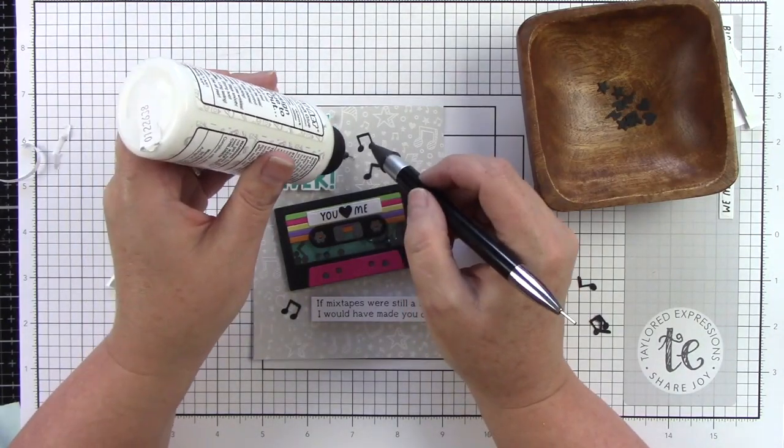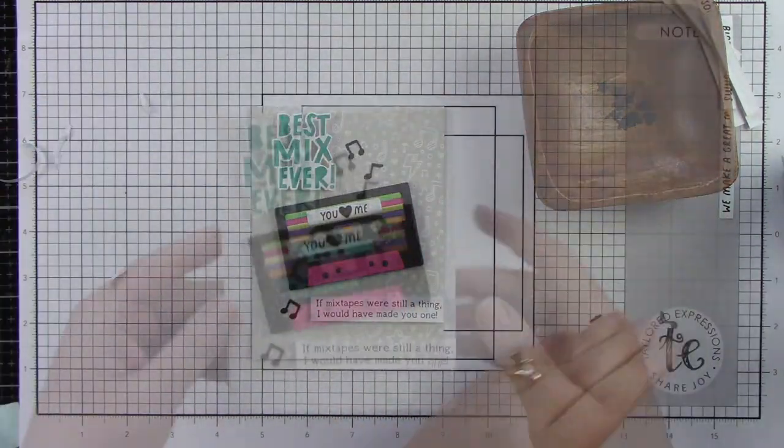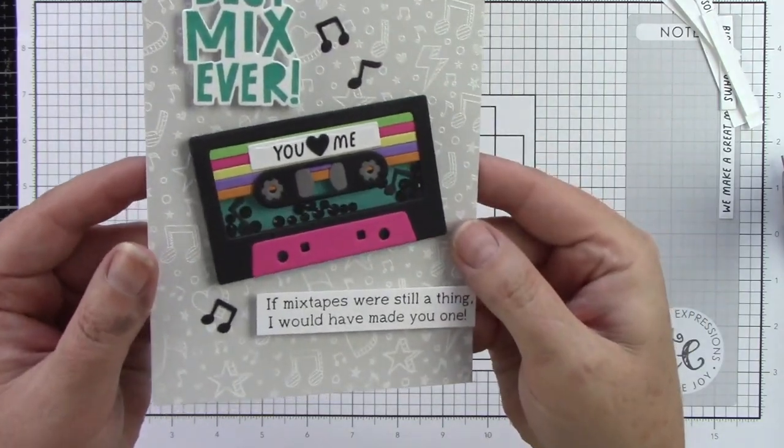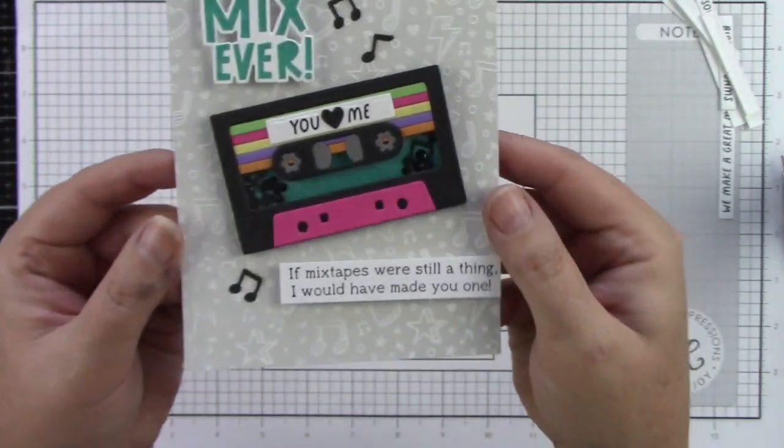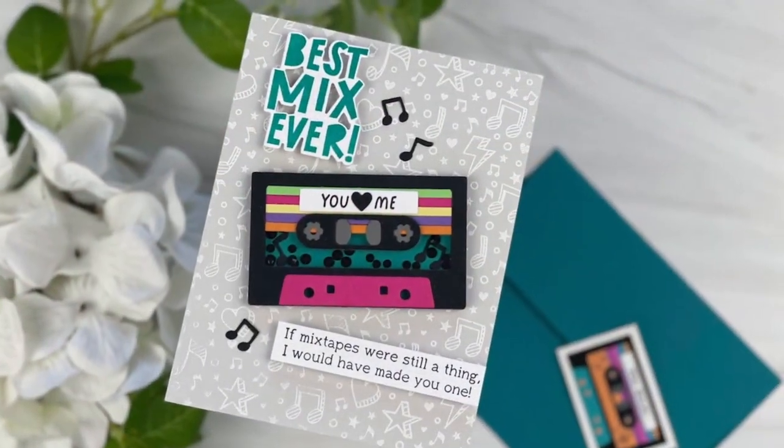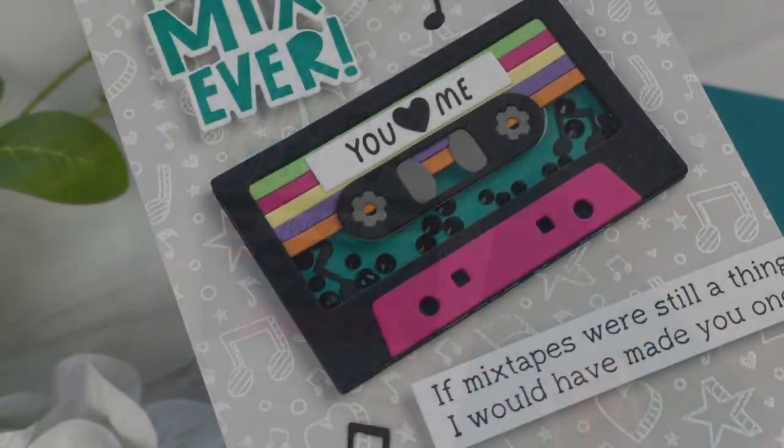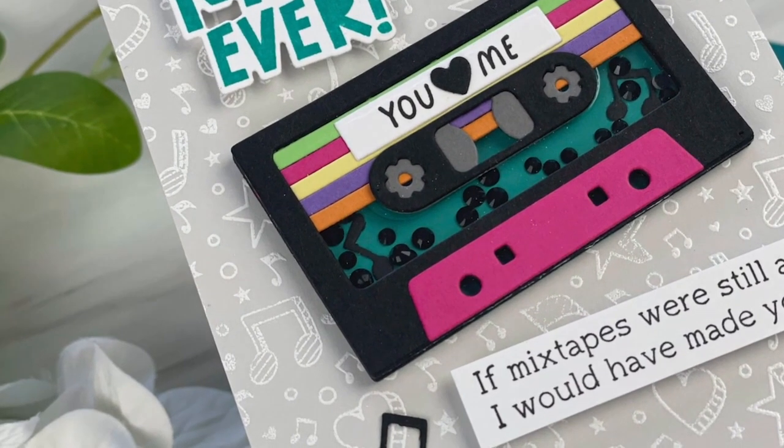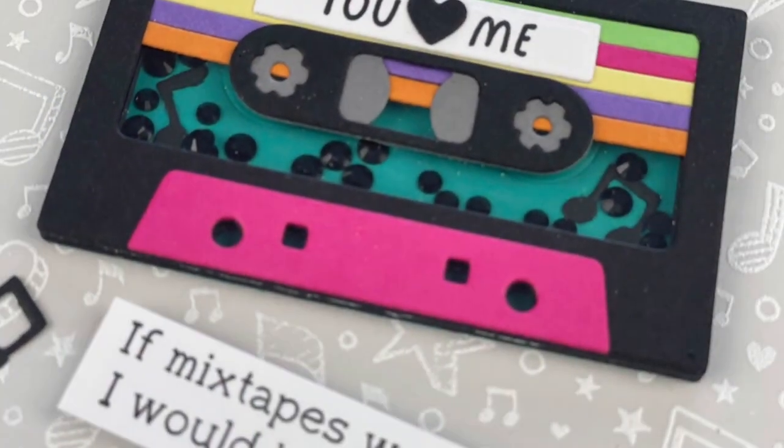There is that cute little heart and then we have some more of the musical notes. This will be adhered to an A2 size card base like a white A2 size card base. How cute is this you guys? You totally need this kit in your life, it is so darling. You can find all of these products at the Tailored Expressions web store at tailoredexpressions.com.